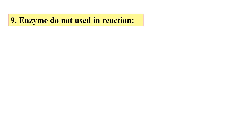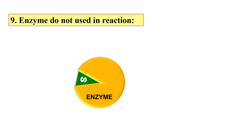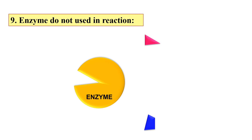The next property is that enzymes are not used up in reactions — at the end of a reaction, enzymes are not utilized and remain available for the next reaction. As shown in this diagram, an enzyme molecule binds with the substrate, the substrate is converted into product, and the product leaves the active site of the enzyme. The enzyme is then available for another reaction. So these are all the properties about the structure and characteristics of enzymes. See you in the next video — thank you very much.